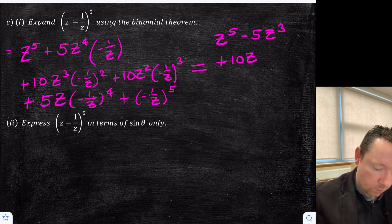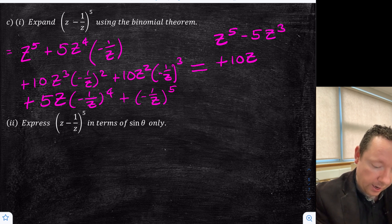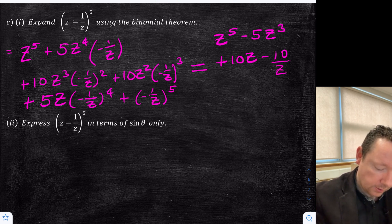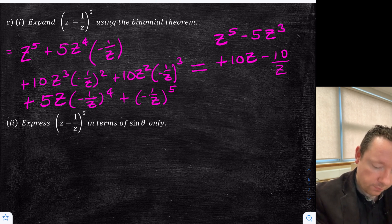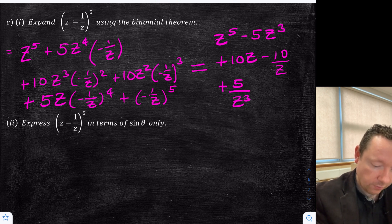Then the next term: z^2 over z^3 is 1/z, so minus 10/z. Then we've got z divided by z^4, which is 1/z^3, but because we've got minus to the power it becomes plus, so plus 5/z^3. And the last term is minus 1/z^5.